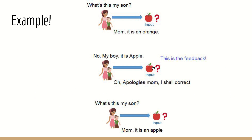Using the mother-son example again: mom shows an apple and son says 'this is an orange.' Mom corrects him: 'this is an apple.' Son realizes the mistake and corrects it. The system gives a penalty for this mistake. Next time mom asks, son correctly says 'this is an apple' — because he took the feedback. This feedback-based approach is reinforcement learning: correct answers earn a positive point or bonus, while mistakes incur a penalty.